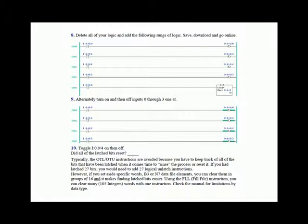We then had you toggle input 4 on and off. Did all of the latch bits reset? Yes, they did. This demonstrates that programmers typically avoid the latch and unlatch instructions because they don't want to keep track of all the bits they've latched when it comes time to reset the process. If you latch all the way through your program, you have to go back and unlatch. If you had latched 27 bits, you would need 27 logical unlatch instructions.